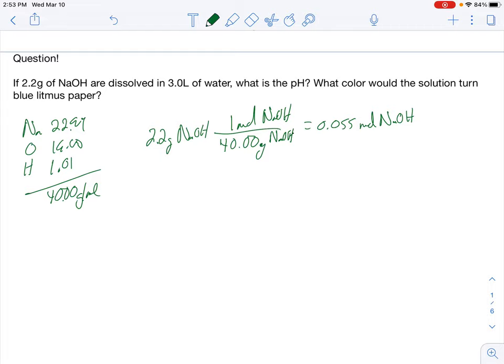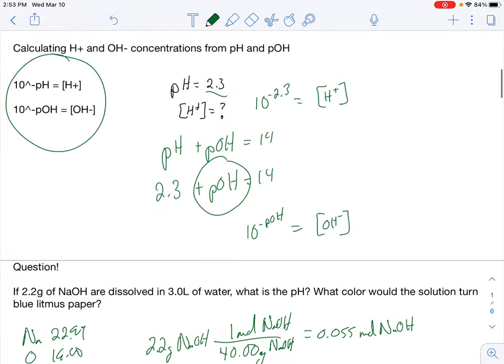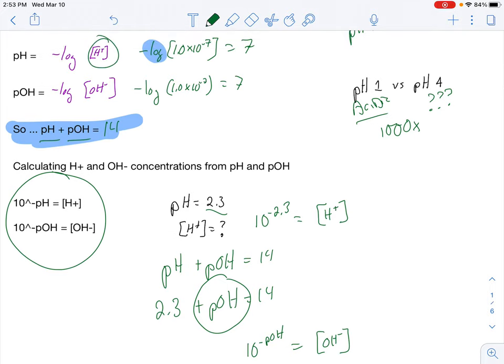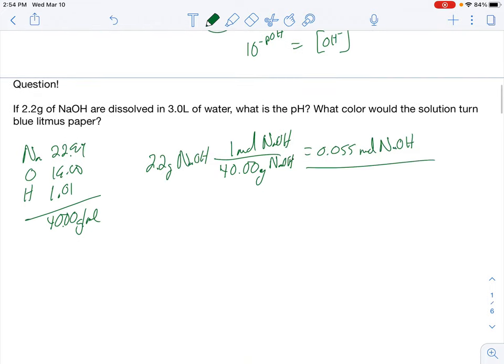Now, I need to have a concentration to actually calculate pH. Remember, it's these little brackets up in here. So that is going to be molarity. So I'm going to divide my total number of moles by my volume of solution, 3.0 liters. That's going to give me 0.018333 M hydrogen ions. Oh, wait. Is that hydrogen ions or hydroxide ions? How would I know? Well, what compound do I actually have here? Sodium hydroxide. That's going to break into sodium ions and hydroxide ions. Ooh, okay. So this isn't hydrogen ions. This would be hydroxide ions. That's pretty important to know.